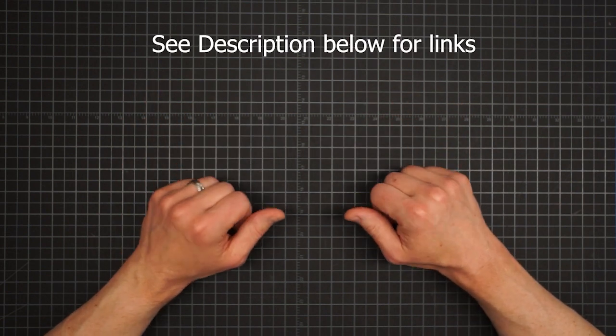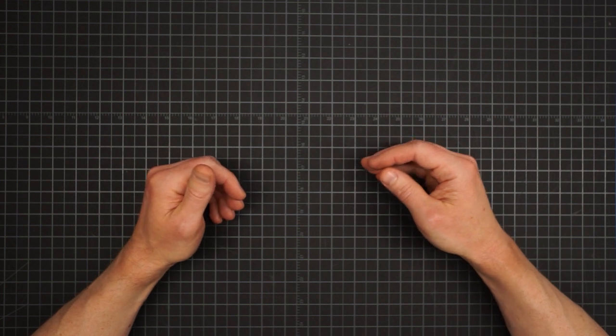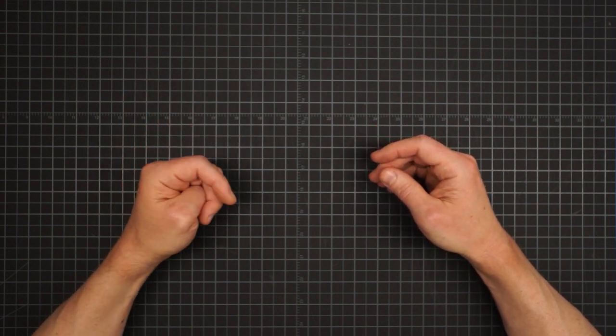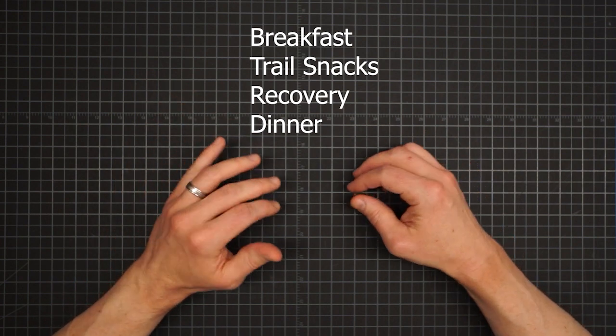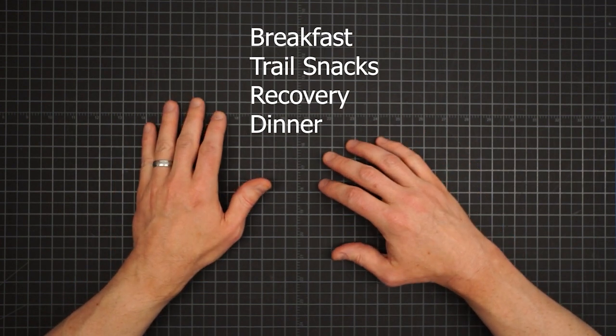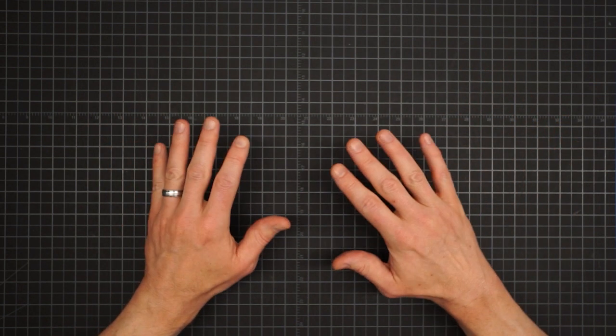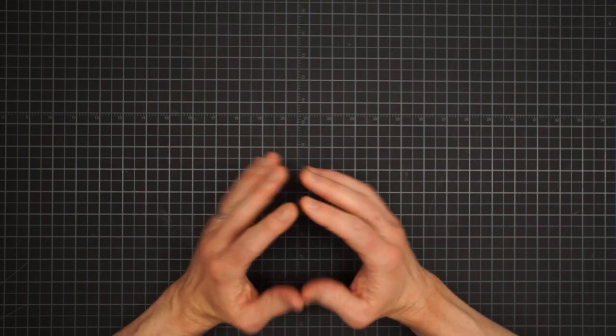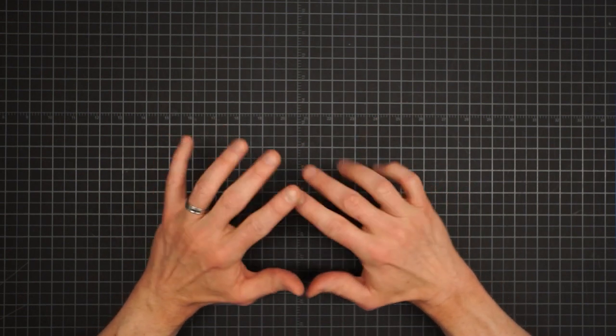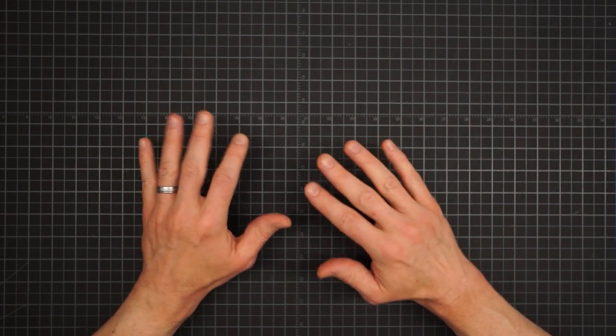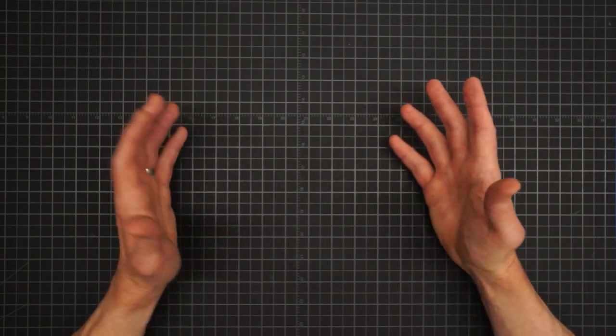Check below for a link to download the chart. Now I broke the eating done while backpacking into four different events: breakfast, trail snacks, recovery, and dinner. In part two it's time to talk about the last two, recovery and dinner. As before, I've done my absolute best to use actual published peer-reviewed scientific studies to document everything we'll talk about.